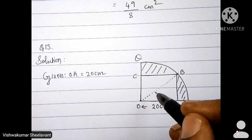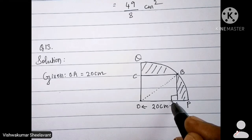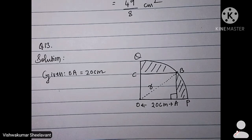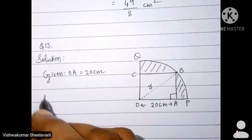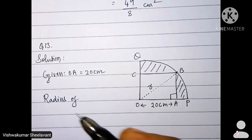But what is OB here? OB is a diagonal of square. So you can make use of Pythagoras theorem. And this becomes radius of the quadrant or radius of the circle of which a quadrant is considered here. Now write radius of quadrant.